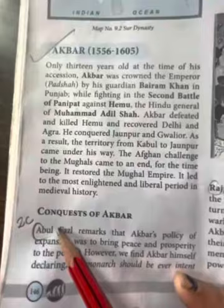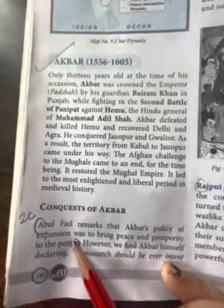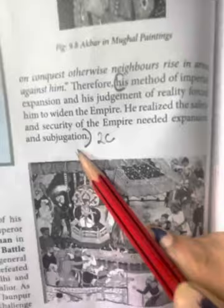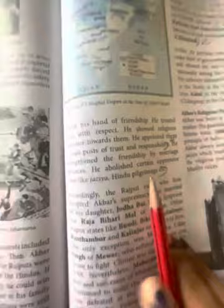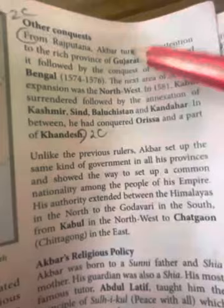Mark answer 2C on page number 146, left hand side, last paragraph — Abul Fazal, till people. Then right hand side: his method, till subjugation. Then Rajput policy, from here till etc. You can make it short in between if you want. Then other conquests, full paragraph, till Khandesh.